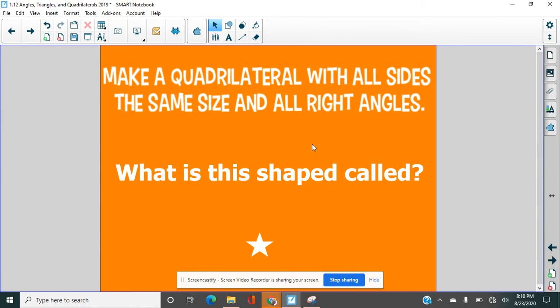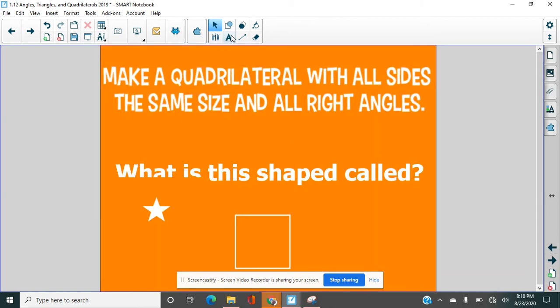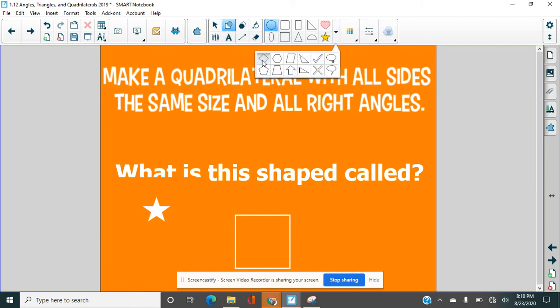If we have a quadrilateral with all sides the same size and all right angles, we would have a square. Sometimes people say a square has four equal sides. That's true, but in order to actually be a square, it needs to also have four right angles. A square has to have both, four equal sides and four right angles. Because if you take your square here, let's say we pushed it together.